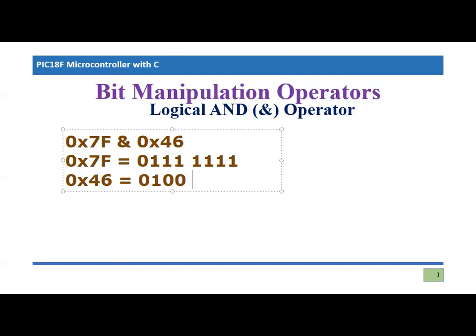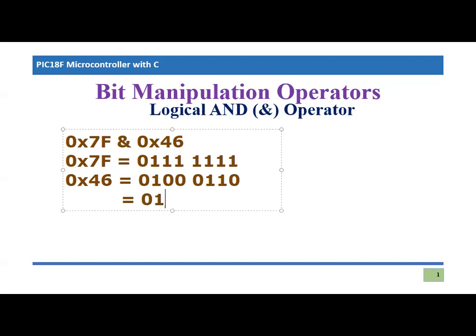Similarly, 0x46 in binary is 0100 0110. I'm doing this manually so you can understand how these operations work. Now performing the logical AND operation bit by bit: 0 AND 0 = 0, 1 AND 1 = 1, 1 AND 0 = 0, 1 AND 0 = 0, 1 AND 0 = 0, 1 AND 0 = 0, 1 AND 1 = 1, and the last bit 1 AND 0 = 0.